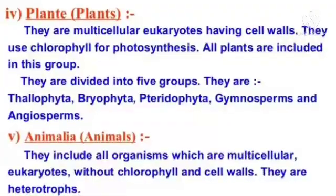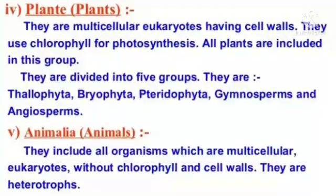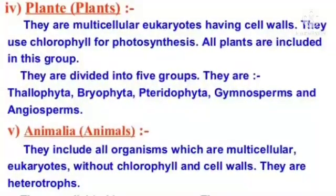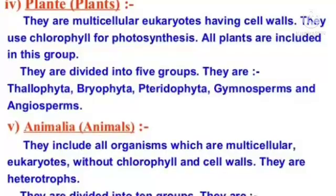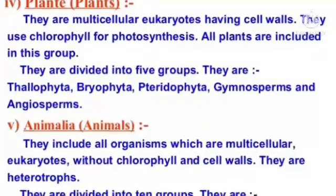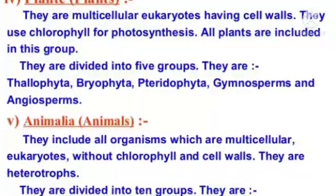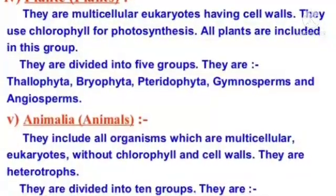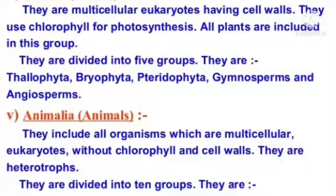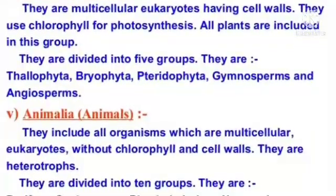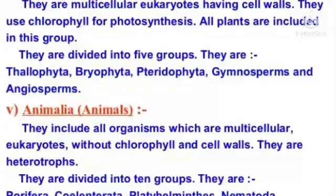Plantae: They are multicellular eukaryotes having cell walls. They use chlorophyll for photosynthesis. All plants are included in this group. They are divided into 5 groups: Thallophyta, Bryophyta, Pteridophyta, Gymnosperms, and Angiosperms.